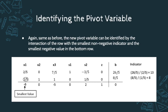To identify the new pivot variable, we apply the same logic as before. The new pivot variable is found at the intersection of the row with the smallest non-negative indicator and the smallest negative value in the bottom row. In this case, the smallest negative value is negative six, and the new pivot variable is 1 over 5.